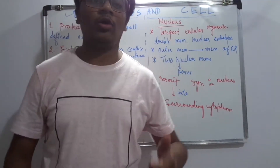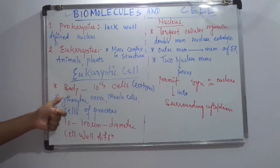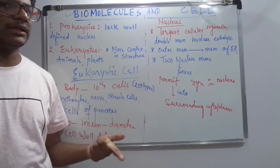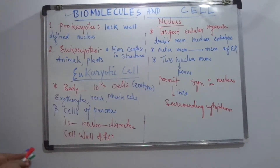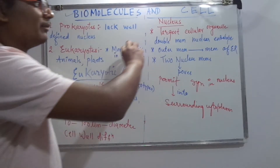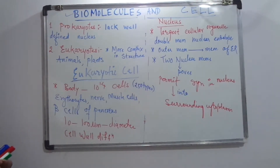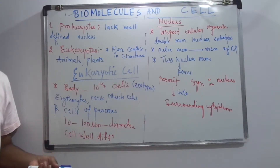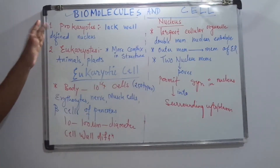Welcome to my YouTube channel Knowledge of Physio Classes. I am going to do a detailed discussion about biomolecules and cells. Biomolecules are of four types: carbohydrates, lipids, proteins, and nucleic acids. It is a very simple chapter, so let's start without wasting any time.